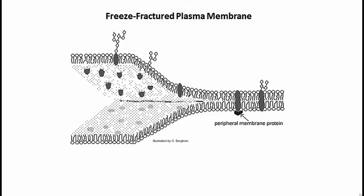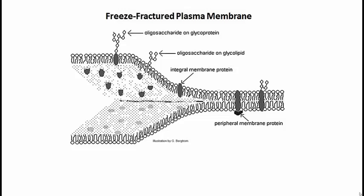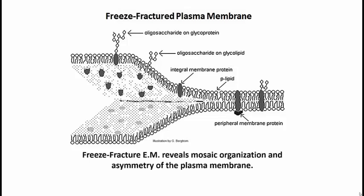This kind of electron microscopy confirms that proteins are indeed embedded in the phospholipid bilayer — not merely sitting on either side interacting with the phosphate heads, but actually spanning all the way through. All the proteins shown, with one exception called the peripheral membrane protein, are transmembrane or integral membrane proteins. The oligosaccharides shown — glycoside-linked sugars on glycoproteins and in one case a glycolipid — must be on the outside of the cell, allowing you to identify what's outside and inside relative to the plasma membrane.